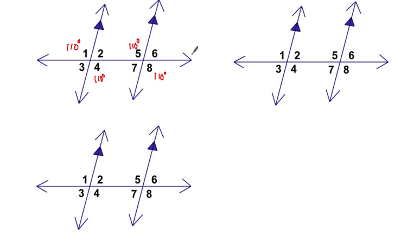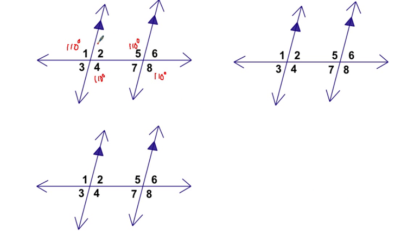I could also have taken angle 1 being 110 and concluded that angle 8 was 110 just because those are alternate exterior angles — if two parallel lines are cut by a transversal, then alternate exterior angles are congruent. So you've got some options as far as how your brain wants to see and make the conclusions. Since angle 1 is 110, angle 2 has to be 70 degrees because angles 1 and 2 are a linear pair. Angle 3 is also a linear pair with angle 1 or angle 4, or you could say it's vertical to angle 2, so angle 3 is also 70 degrees — same thing for angles 7 and 6.